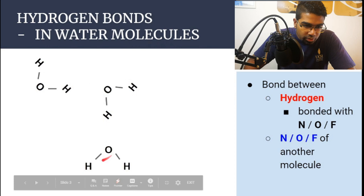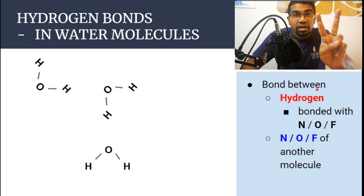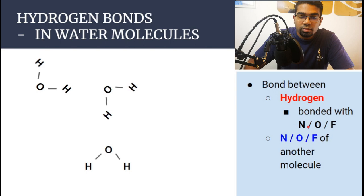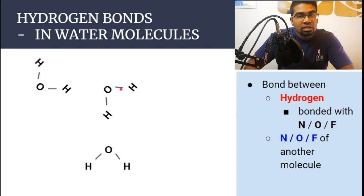Let's look at hydrogen bonds between water molecules. Water molecules have hydrogen bonds between them. A hydrogen bond requires two things. First is a hydrogen atom that is bonded with a nitrogen atom, oxygen atom, or fluorine atom. So in water, these two hydrogens are bonded to oxygen — this is the first requirement.